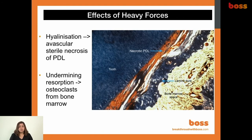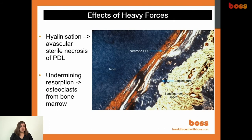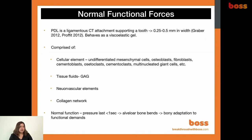What we want is not to apply heavy force. Heavy force causes a necrotic periodontium, which requires inflammatory cells to be recruited to remove it before tooth movement can proceed. This slows down tooth movement and can also cause damage to the root surface such as root resorption. Heavy force can cause hyalinization, which is avascular sterile necrosis of the PDL. Undermining resorption is when osteoclasts from bone marrow are recruited to remove that PDL. We want hyalinization zones and undermining resorption to be minimal.